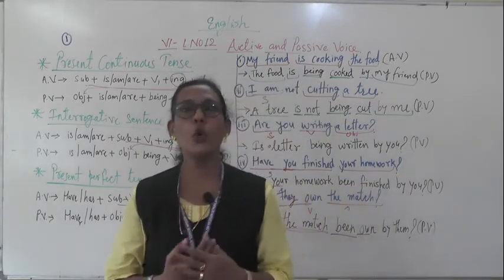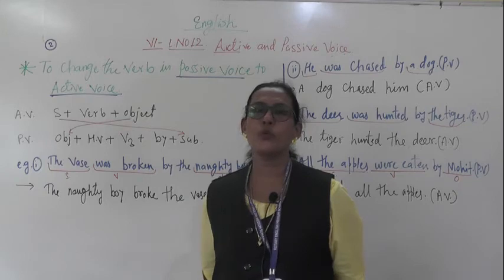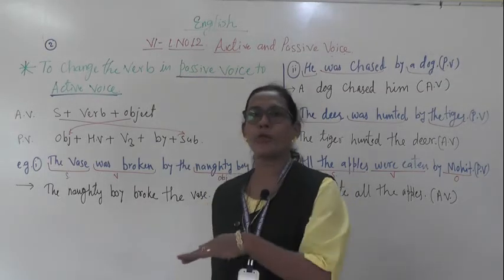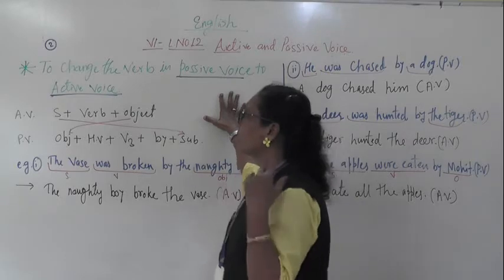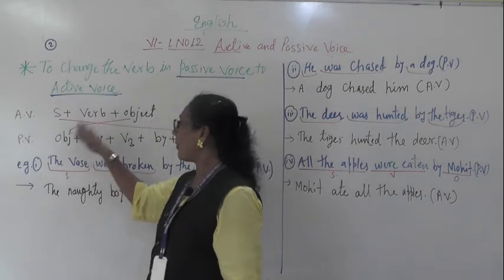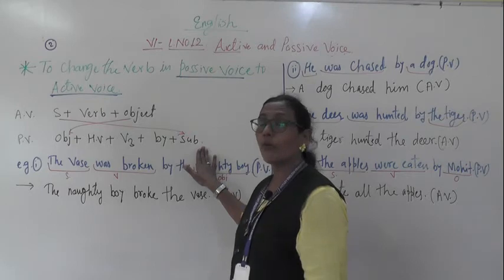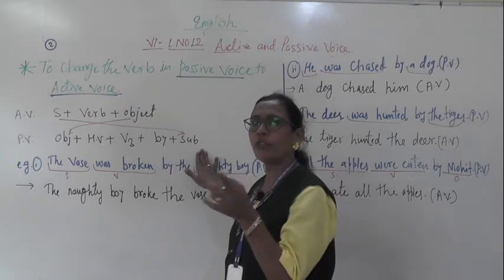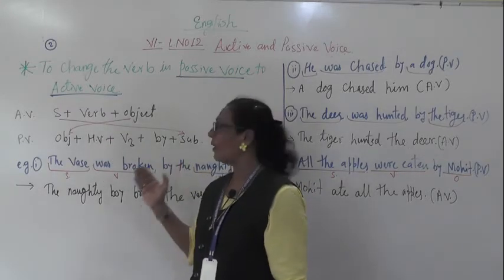Now we will see how to change passive voice into active voice — vice versa. Till now we changed active to passive; now we change passive to active. The structure for active voice is: subject + verb + object. The short clue: whichever sentence has 'by' in it, that is passive voice. Find the subject, verb, and object from the passive sentence and rewrite in active order.